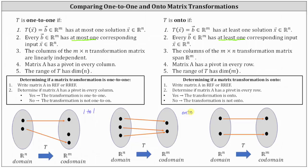Looking at the third mapping, both vectors in Rn have exactly one corresponding input vector. Therefore it satisfies both conditions: every vector b has at most one corresponding input vector, and every vector b has at least one corresponding input vector. This last mapping is both one-to-one and onto.